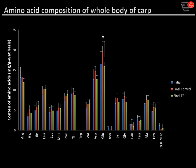This last data shows the amino acid profile of the whole carp body. Blue represents the initial values, and red and green represent the control and TP groups respectively at day 30. For glutamine we found slightly higher values in the control group compared to the treatment groups, but for the other amino acids, no significant differences were found. This means the amino acid profile of the edible portion of carp was of comparable quality in both diets.